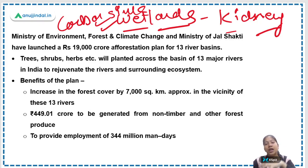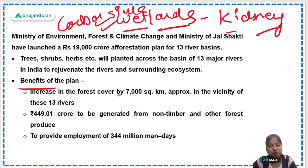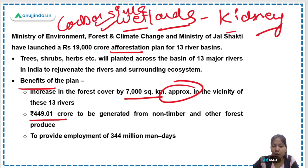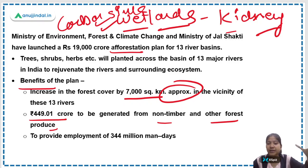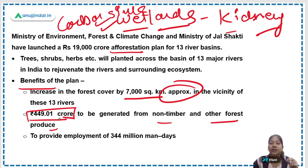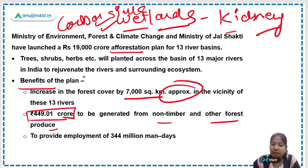Afforestation across the basin will definitely rejuvenate the river and surrounding area. Specifically, the area brought under forest cover will increase by approximately 7,000 square kilometers. Revenue will also be generated from non-timber and other forest products, which people in adjoining areas will sell, earning a livelihood.